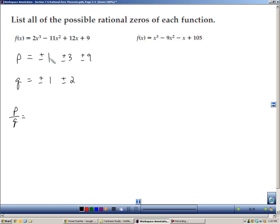So let's do that. P over Q, I could do 1 over 1, or 1. I could do 3 over 1, so positive and negative 3. I could do 9 over 1. I can do 1 over 2, which would be a positive and negative half. I could do 3 over 2, which would be a positive and negative 3 halves. And I could do a 9 over 2, which is positive and negative 9 halves. So these are all of the possible zeros of this function.